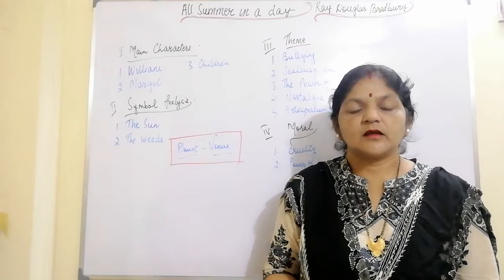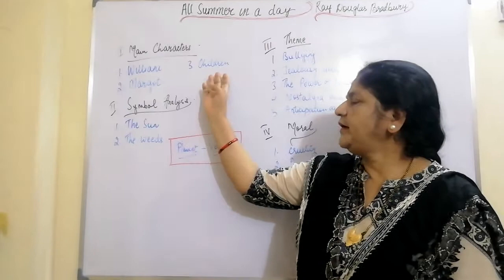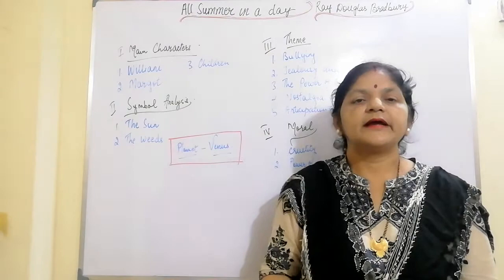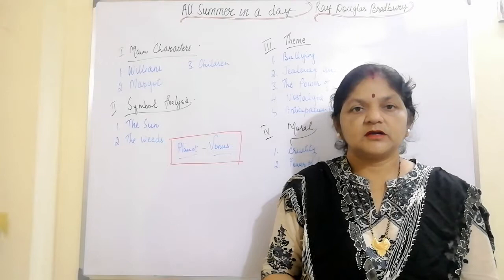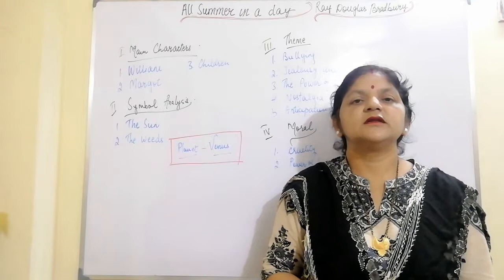My fourth character is William. William is a boy in Margaret's class, and he acts as a ringleader for the other students because he is jealous of Margaret's experiences. He discredits her when she talks about the sun and tries to provoke her into fighting with him. William vents his frustration by getting the other children to help lock Margaret in a closet during the brief period that the sun is out.